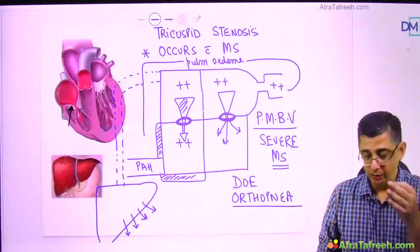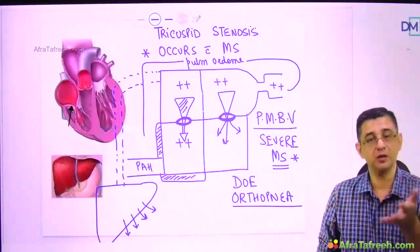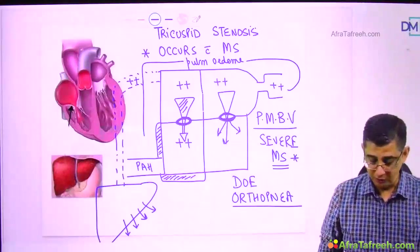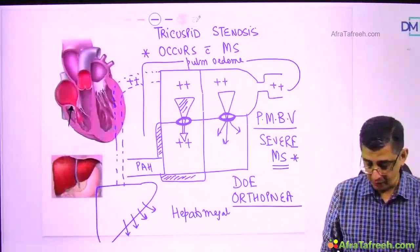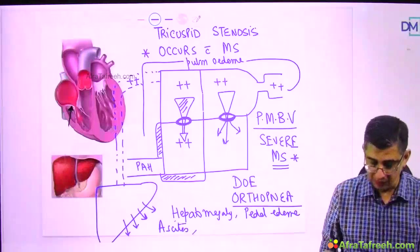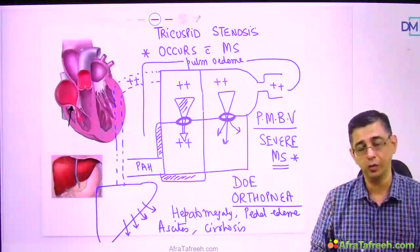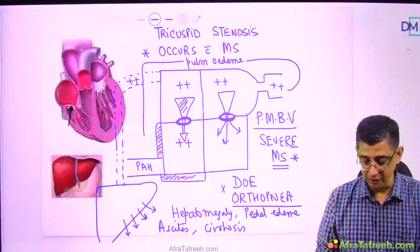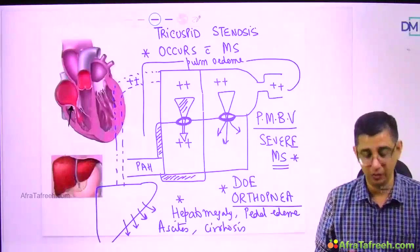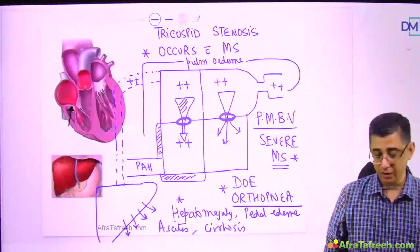This explains the textbook finding: in a person with severe mitral stenosis treated with balloon dilatation, features of right ventricular failure develop. Congestion in the superior and inferior vena cava is transmitted to the liver, causing hepatomegaly, pedal edema, and ascites. In the long run, the patient can develop cirrhosis with features like caput medusae. This may resemble portal hypertension, but portal hypertension does not present with dyspnea on exertion, and cirrhosis-related portal hypertension does not cause hepatomegaly.